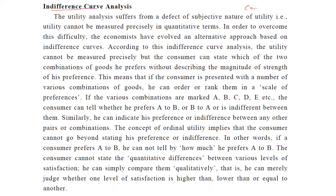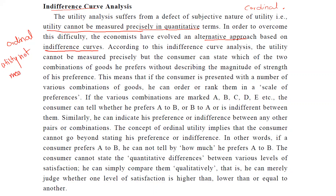In the cardinal approach there were some drawbacks. The first drawback was they said that utility is measured, but in reality utility cannot be measured in quantitative terms. So in order to overcome this difficulty, economics has evolved an alternative approach based on indifference curves. That approach is known as the ordinal approach, where utility is not measurable but the consumer can rank his preference.